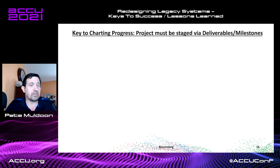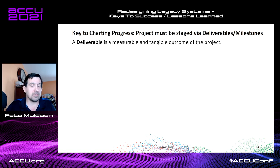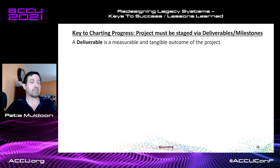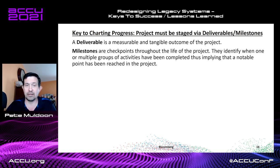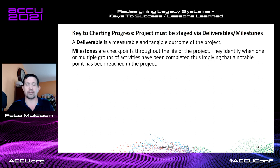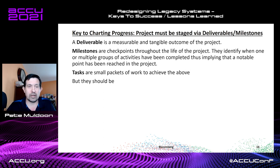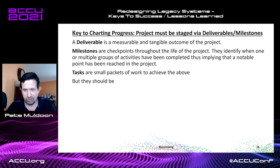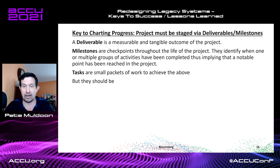The next key is charting progress. The project should be staged with deliverable milestones and tasks. A deliverable is an observable outcome of the project — I can see it, feel it, touch it. Milestones are checkpoints throughout the life of the project to say we've hit some notable point — a set of tasks or deliverables have been hit. Tasks are the small packets of work that allow you to get the deliverables done, which allow you to reach your milestones. Tasks should be short in scope, because their resolution gives you a precise view of where you are on the timeline.